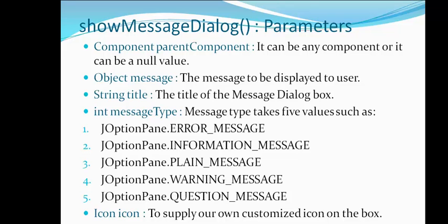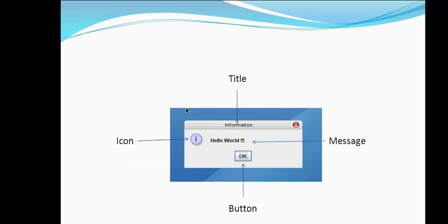Let's see how the message dialog window looks. The dialog window has a title at the top, a small icon that signifies what type of message it is — information, question, error, etc. — a message displayed in the middle that we want to show the user, and a button at the bottom. Whenever the user clicks the button, the dialog box gets closed.